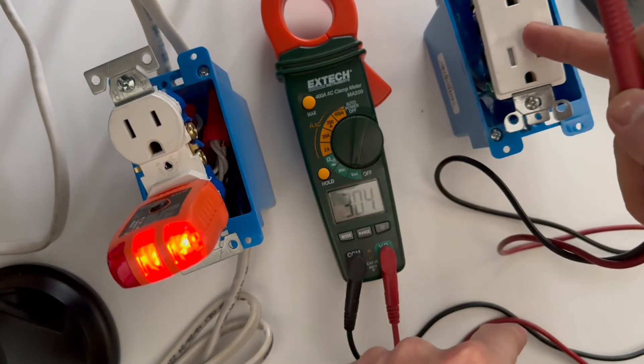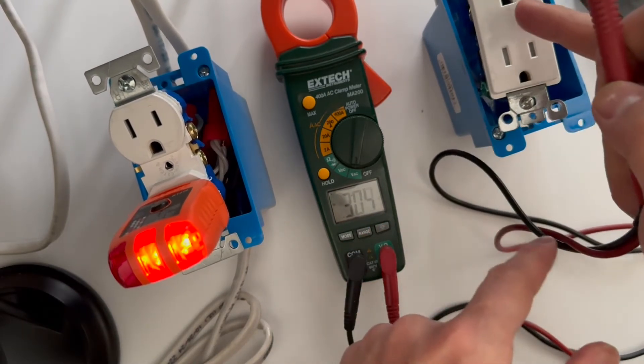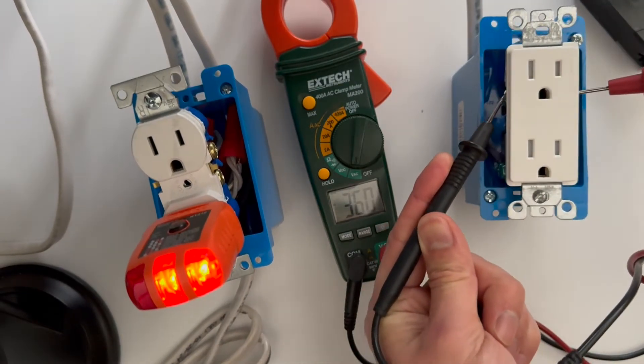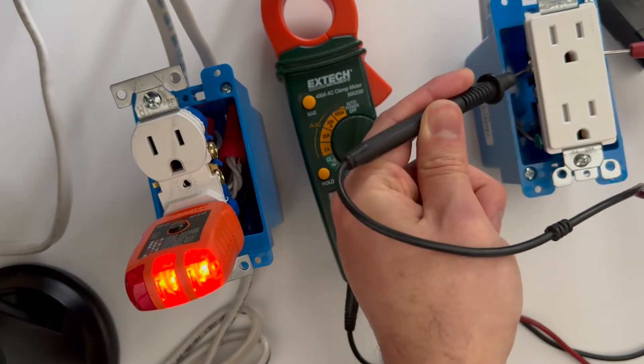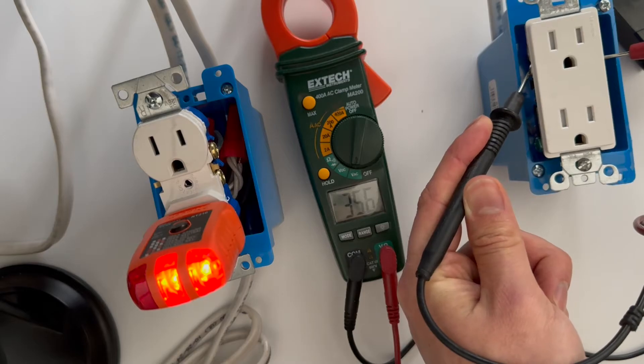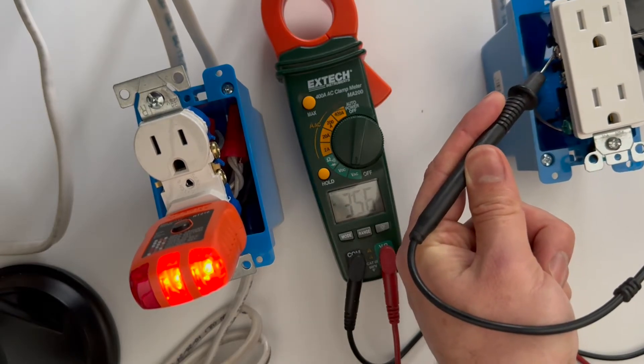In an outlet that you don't have power but you have hot ground reversed, when you try to read between neutral and the hot, it's showing 35 volts. That's an open neutral.